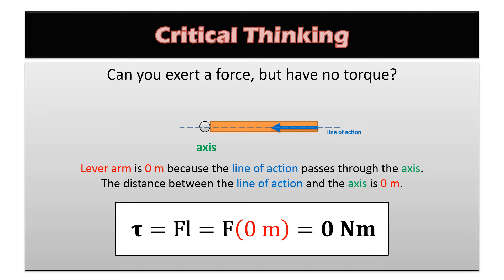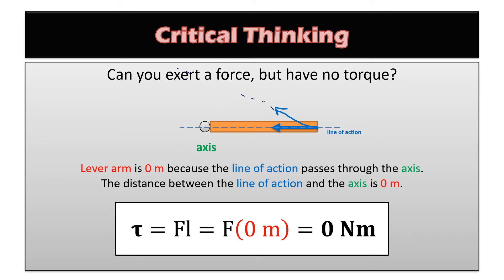Think of a door seen from above — if you push it toward the axis, you won't rotate it at all. If you push outward along the axis, the lever arm is still zero. But as soon as you move even a little bit off-axis, the line of action no longer passes through the axis, and you get a lever arm at 90 degrees — so the door would rotate. If it rotates counterclockwise, the torque is positive.